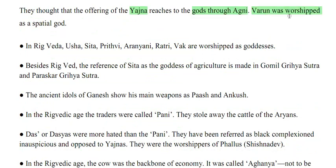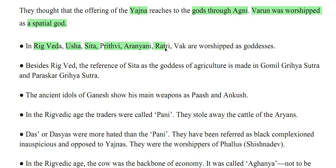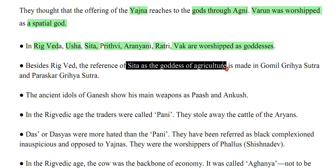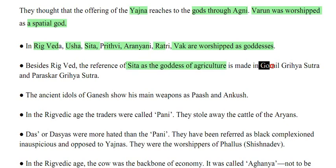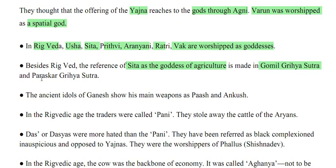Varun was worshipped as a special god. In Rigveda, Usha, Sita, Prithvi, Aranimi, Ratri and Vak are worshipped as goddesses. Besides Rigveda, the reference of Sita as the goddess of agriculture is also made in Gomil Grehasutra and Praskar Grehasutra.